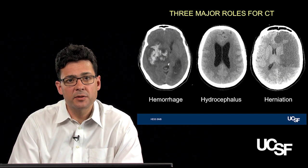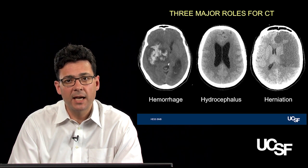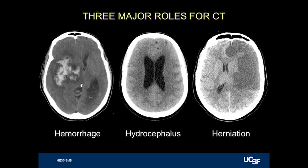I like to tell my trainees there are really three major rules for performing a CT examination in unstable patients where you need an answer quickly. You can really only see three things with great fidelity: hemorrhage — here you can see a large hemorrhage in the right side of the brain; hydrocephalus — CT shows CSF separate from the brain nicely, and here the ventricles are enlarged, compressing the brain; and herniation — a surgical emergency where the brain moves across rigid structures and can be significantly damaged, as shown in this patient with a large MCA territory infarction causing midline shift.